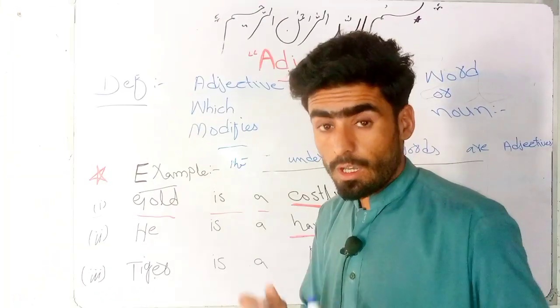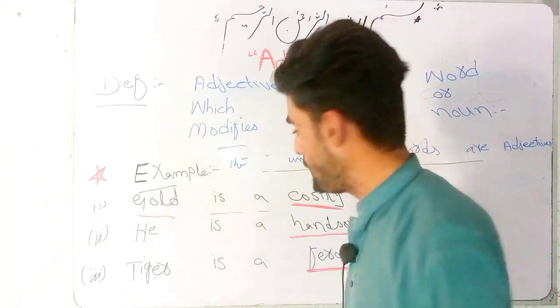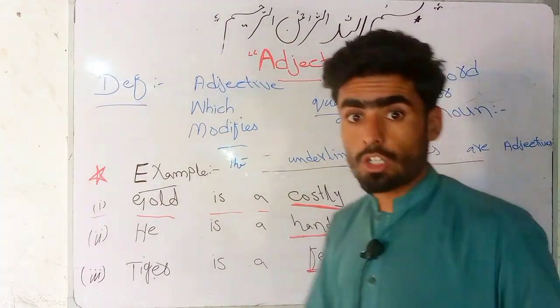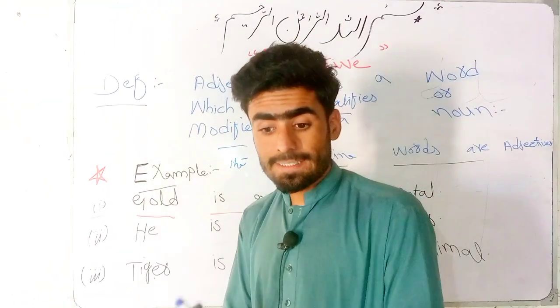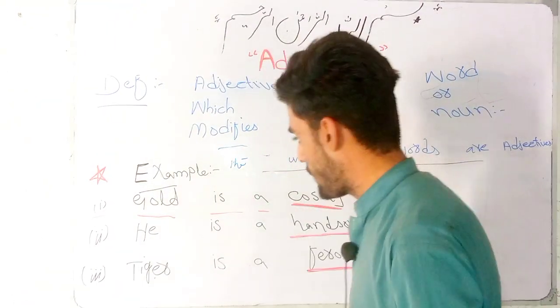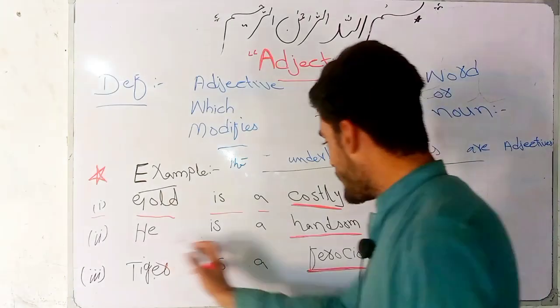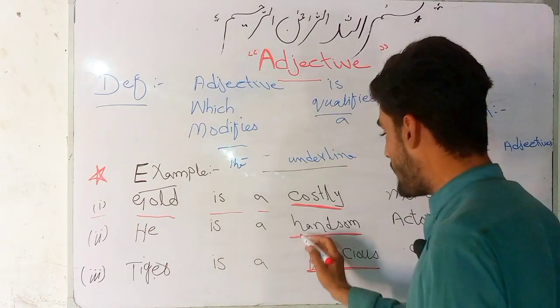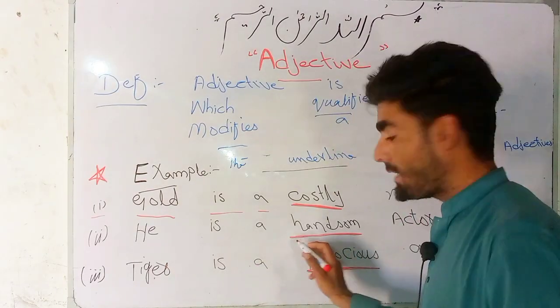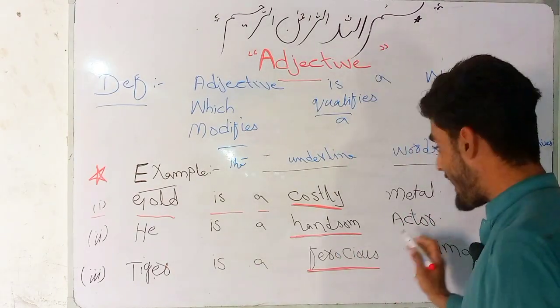Gold is a costly metal. The word 'costly' is called an adjective. We could simply say 'Gold is a metal,' but we use the adjective 'costly' to modify it. Similarly, 'He is a handsome actor.'